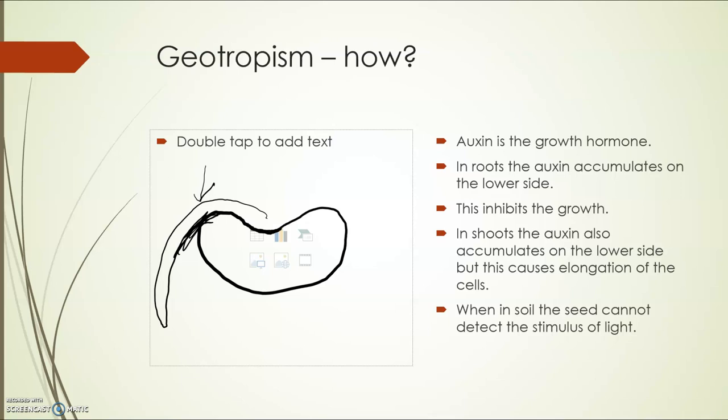However in the shoot, what we're going to find happen is this. In shoots, like it did for phototropism, the auxin will accumulate again on this lower side around this area here, but it still elongates the cells on this side. So in roots it inhibits, but in shoots it does cause elongation.